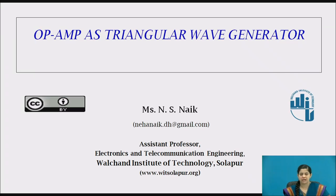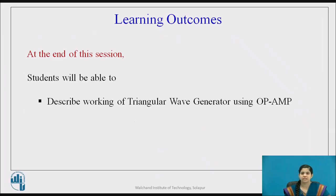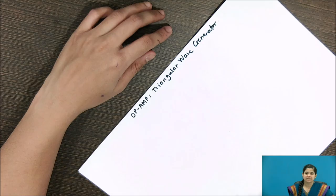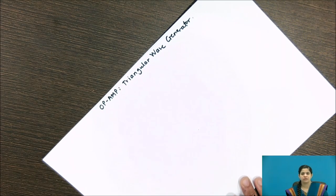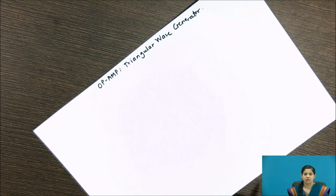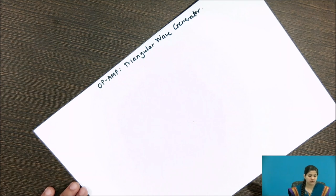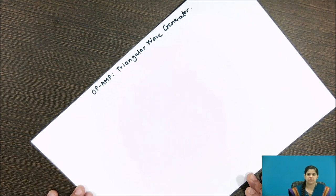This is a video lecture on op-amp as a triangular wave generator. At the end of this session, students will be able to describe the working of a triangular wave generator using an operational amplifier. In the last lecture, we saw the op-amp as a square wave generator, which produced a non-sinusoidal square wave. Now, another non-sinusoidal wave — the triangular wave — can be generated using an operational amplifier.